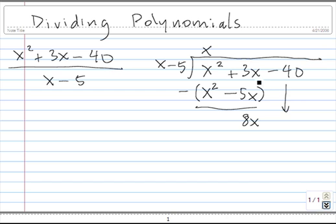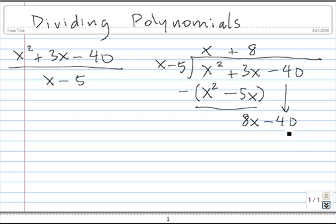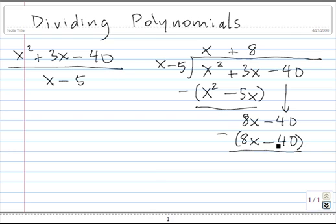Next, we bring down the next term in line, which is minus 40. Then we repeat this exact same process. We look at the leading term x and the leading term 8x here. What times x equals 8x? The answer is 8, so we put a plus 8 up here. Then we multiply 8 times x minus 5 and put it down: 8 times x is 8x, 8 times negative 5 is negative 40. Then we subtract: 8x minus 8x is 0, and negative 40 minus negative 40 is really negative 40 plus 40, which equals 0.